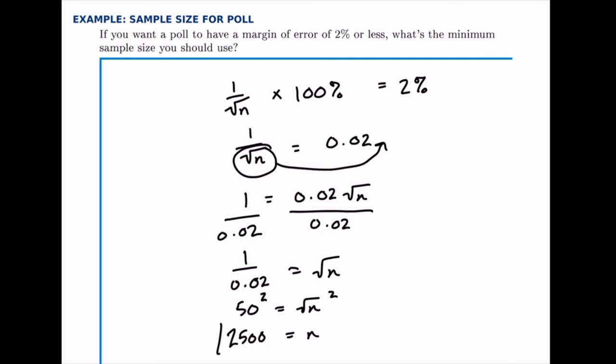So that's our answer, that if we sampled at least 2,500 people, we would be guaranteed to have a margin of error of 2% or less. And if we sampled more than 2,500, our margin of error would be less than 2%, but as long as we sample 2,500, we'll be guaranteed to have a margin of error of 2%.